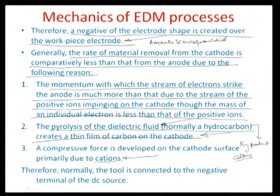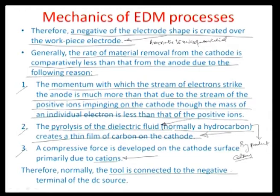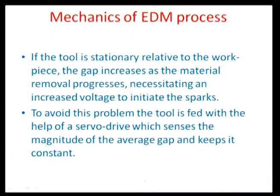These are three principal mechanisms responsible for the differential removal rates across cathode and anode. Therefore, it is preferable that the tool be connected to the negative terminal of the DC source, making it a cathode, and the workpiece be connected to the positive terminal, making it an anode.